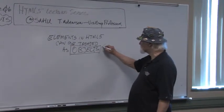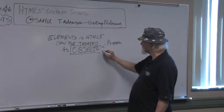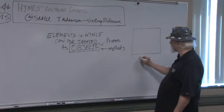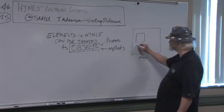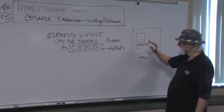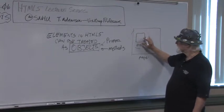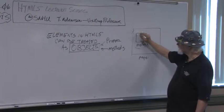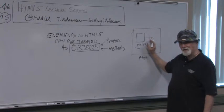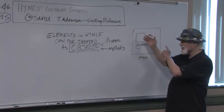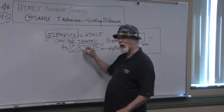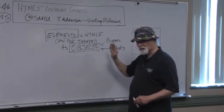An object has two things: it has properties, and it has methods. Anything at all on the web page that you see — let's say you have a picture — that picture is an element. You can find out the dimensions of the picture, how high it is, how wide it is, where it's located on screen. You can change any of those properties, and you can use a method to cause the picture to move across the screen or change images.